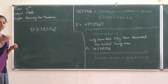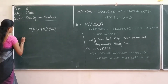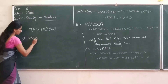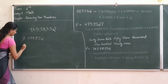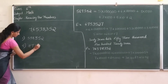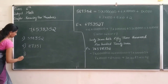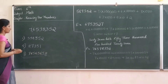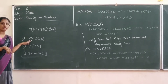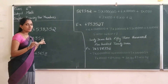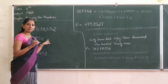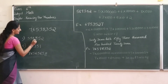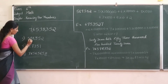Now I will give some questions. You have to write it using commas, then write it in an expansion form, and write the number name. We have to first put a comma — from the right side, after 3 digits, then after 2 more digits. That's it.